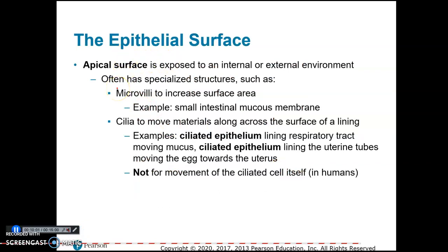The apical surface is exposed to either an internal or external environment — it's the exposed, free surface not connected to any other cell. It often has specialized structures: if folded with microvilli, that increases surface area, as in the small intestines where cells are covered with microvilli to absorb more nutrients. Sometimes the apical surface contains cilia, which in the respiratory tract moves mucus, in the uterine tubes moves the egg toward the uterus, and in the male reproductive tract helps move sperm.